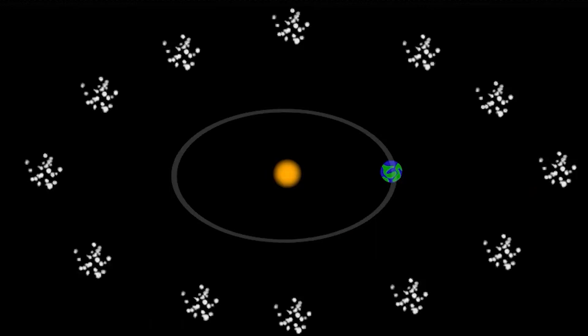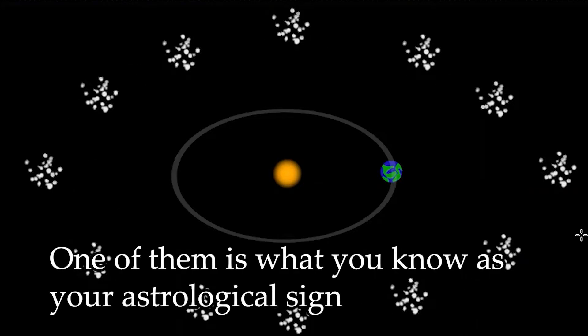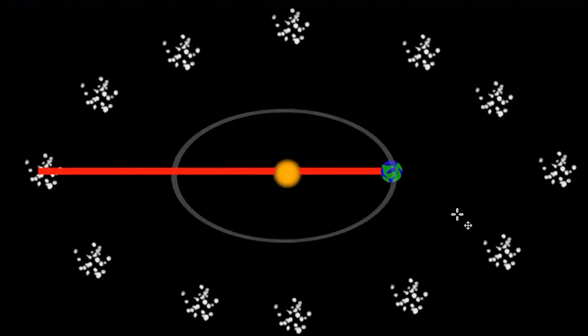There are actually 12 pretty conveniently and evenly placed groups of stars. These are called the constellations. If you imagine standing on earth looking at the sun, it would almost look like the sun were in front of one of the astrology signs.